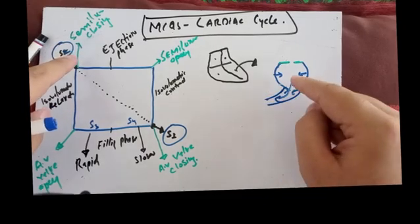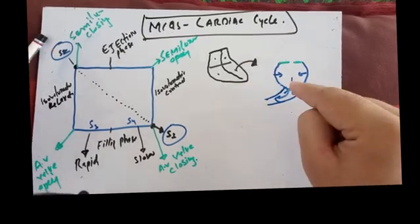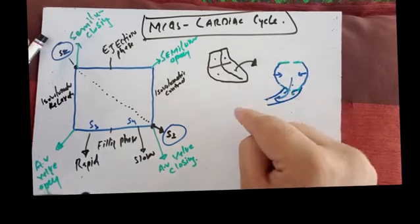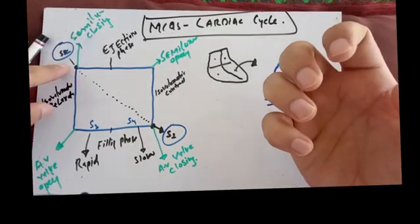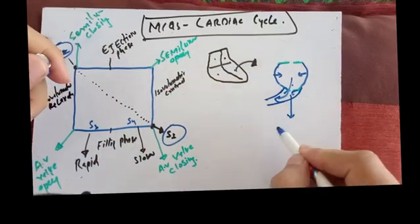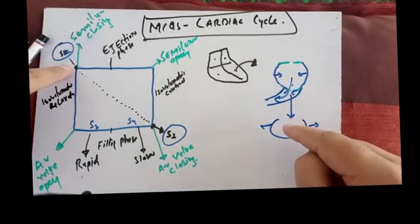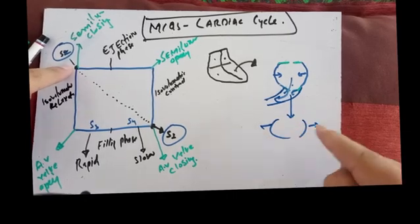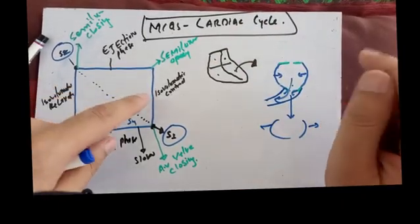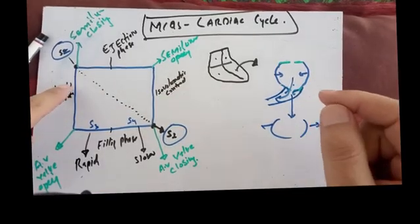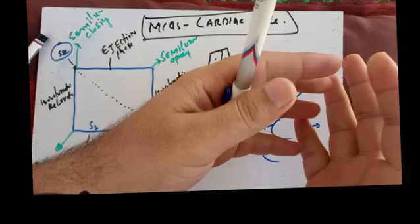When all the blood is ejected from the left ventricle, the pressure inside drops compared to the aorta, so the semilunar valves close, followed by the mitral valve closing. Now the heart is relaxing, but both valves are closed — the volume is constant. This is isovolumetric relaxation. Both isovolumetric contraction and isovolumetric relaxation have both valves closed.